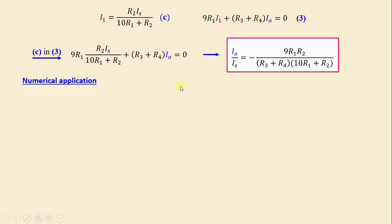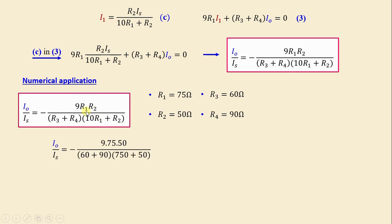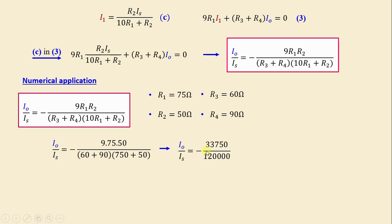Let's move on to the numerical application. Using the given resistor values R1 through R4, we substitute into the gain expression: IO / IS = −9 × 75 × 50 / [(60 + 90) × (750 + 50)], which gives −33,750 / 120,000.